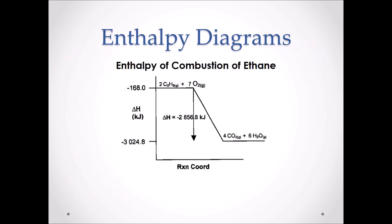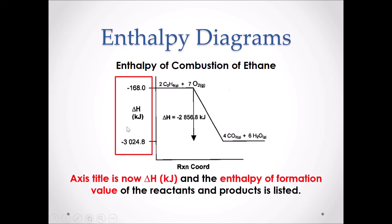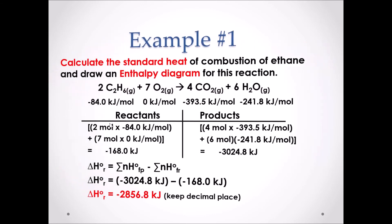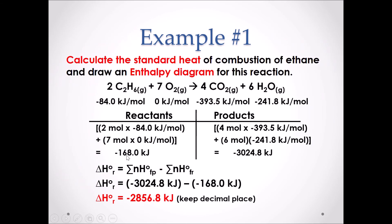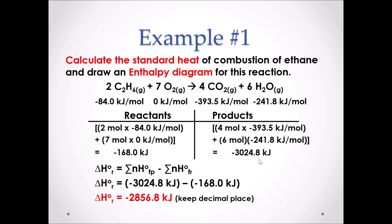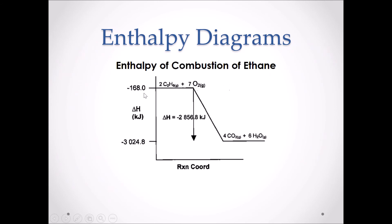An enthalpy diagram is extremely similar to a potential energy diagram. The only difference is the y-axis is labeled ΔH in kilojoules, and we show the enthalpy of formation of the reactants and products on the y-axis. The sums of heats of formation of the products are represented on the y-axis, along with the balanced chemical equation. The ΔH for this reaction is negative 2856.8 kJ.